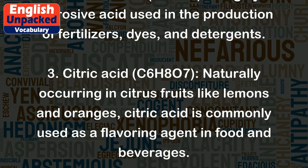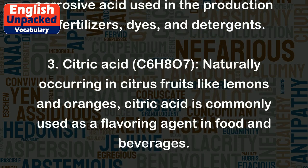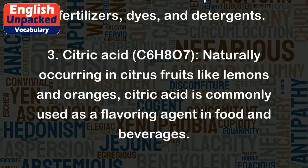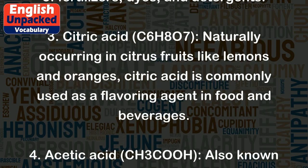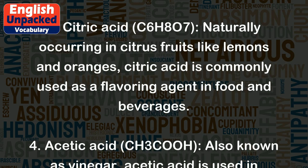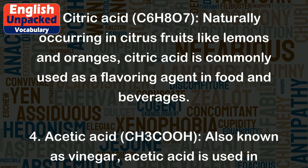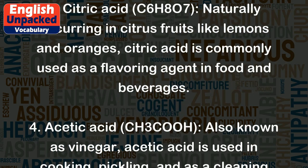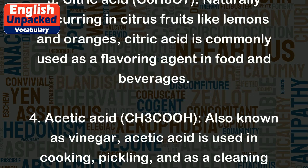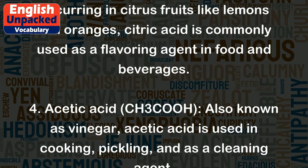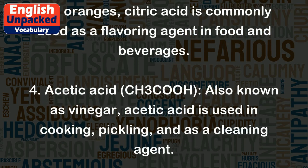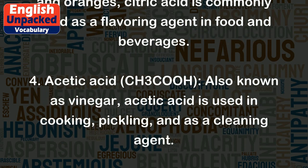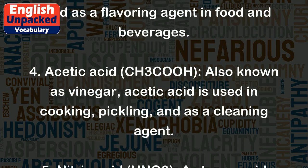3. Citric acid, C6H8O7, naturally occurring in citrus fruits like lemons and oranges. Citric acid is commonly used as a flavoring agent in food and beverages.